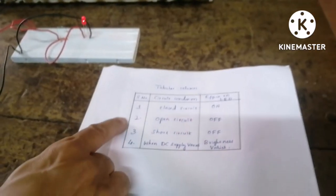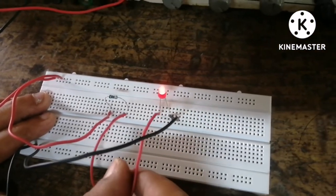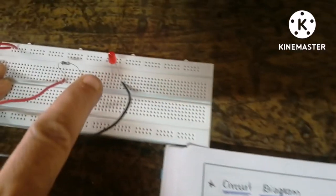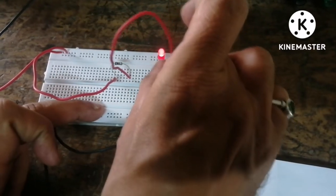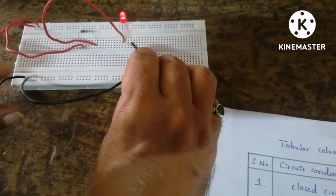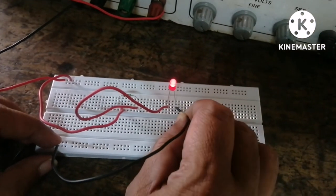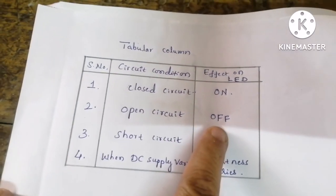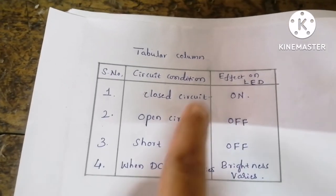Now I will show the second condition — serial number two, that is open circuit. If I remove one wire, you can see the LED is off. I opened this wire and the LED is off. Again, I am reconnecting — as a closed circuit it is on again. From the negative end also I will remove the wire. You can see the LED is off condition. Once I connect, the LED is on condition. Serial number two, open circuit — LED is off. If I remove one wire out of the circuit, the LED is off, as written in the tabular column: effect on LED as off.